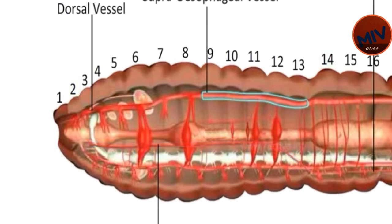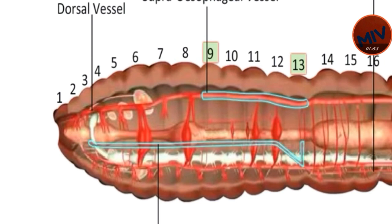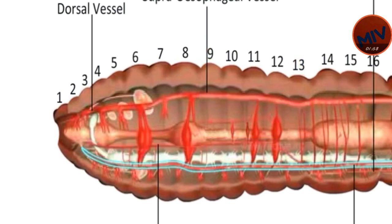Supraesophageal vessel — it lies dorsal to the stomach from the 9th to the 13th segment. It collects blood from the lateroesophageal vessel, gizzard, and stomach. Ventral vessel — it is thin, non-muscular and non-contractile distributing vessel.